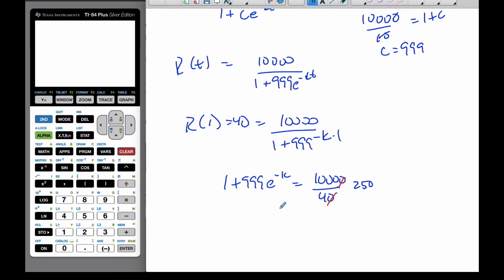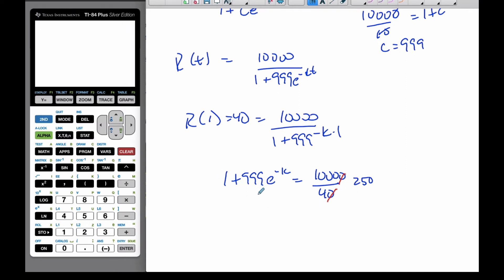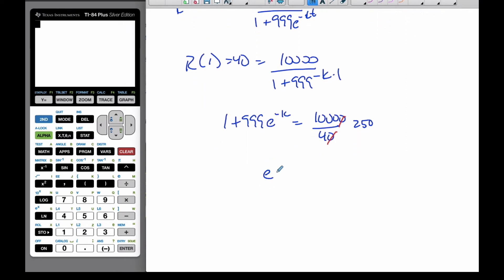So, now, solving for K, I'm going to subtract the 1, divide by 999, so E to the negative K, is equal to 250 minus 1, divided by 999. So, that's 249 over 999.